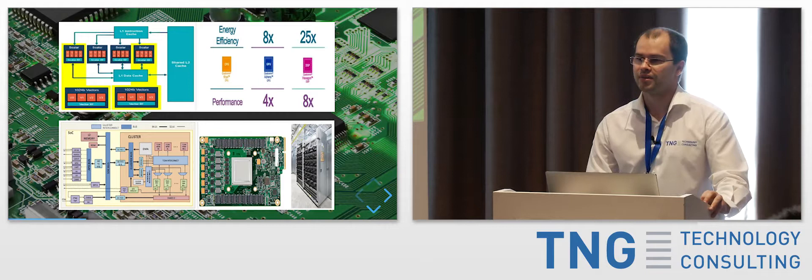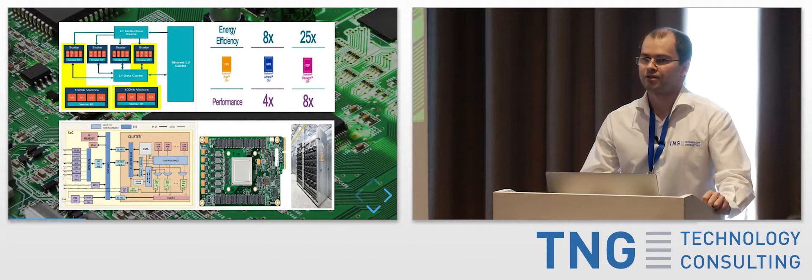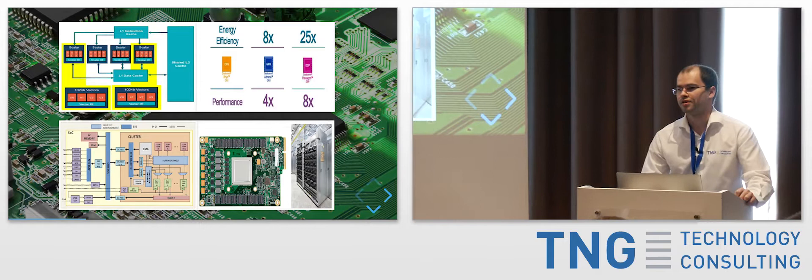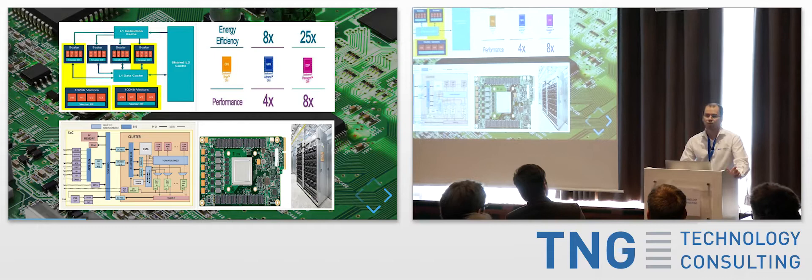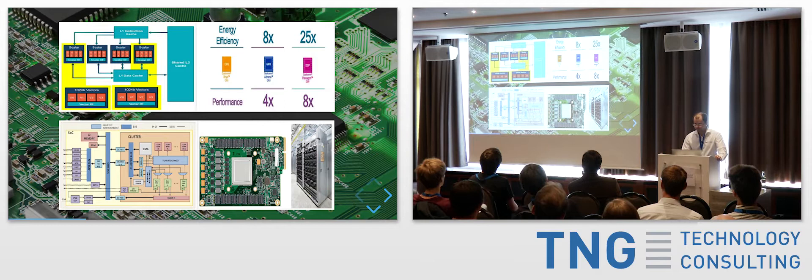ETH Zurich developed something called the Parallel Ultra Low Power Platform, aiming to break the picojoule per operation barrier within a power envelope of a few milliwatts — really impressive. Google's tensor processing units also hardwire activation functions, making processing quite fast. They report speedups of 30 times and power consumption 30 to 80 times better than compared to normal CPUs.